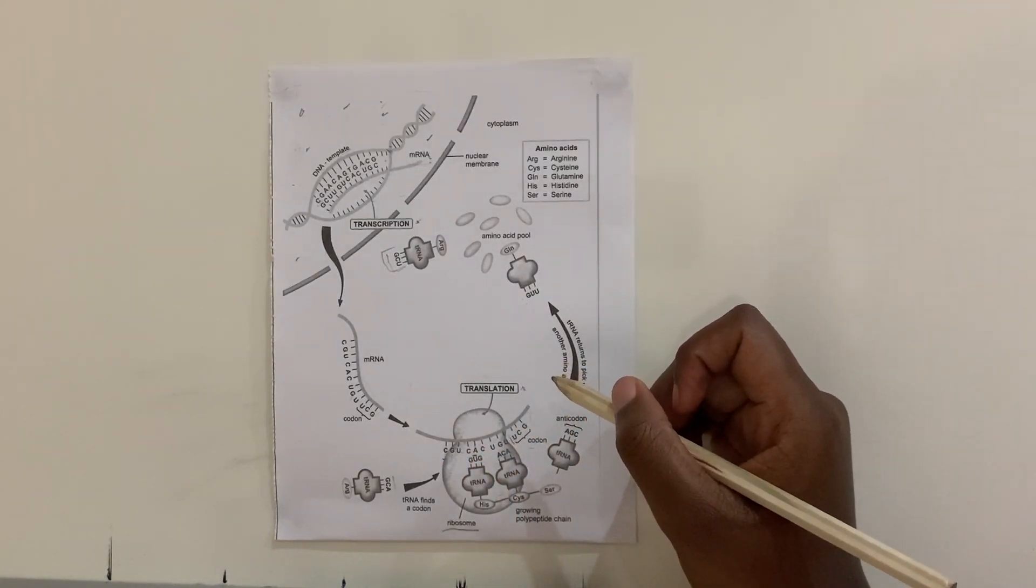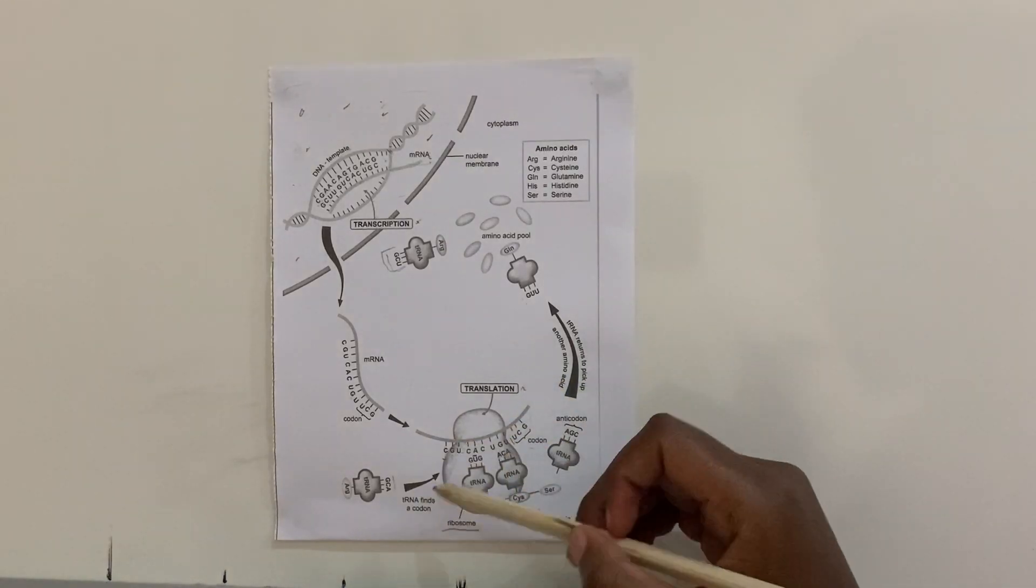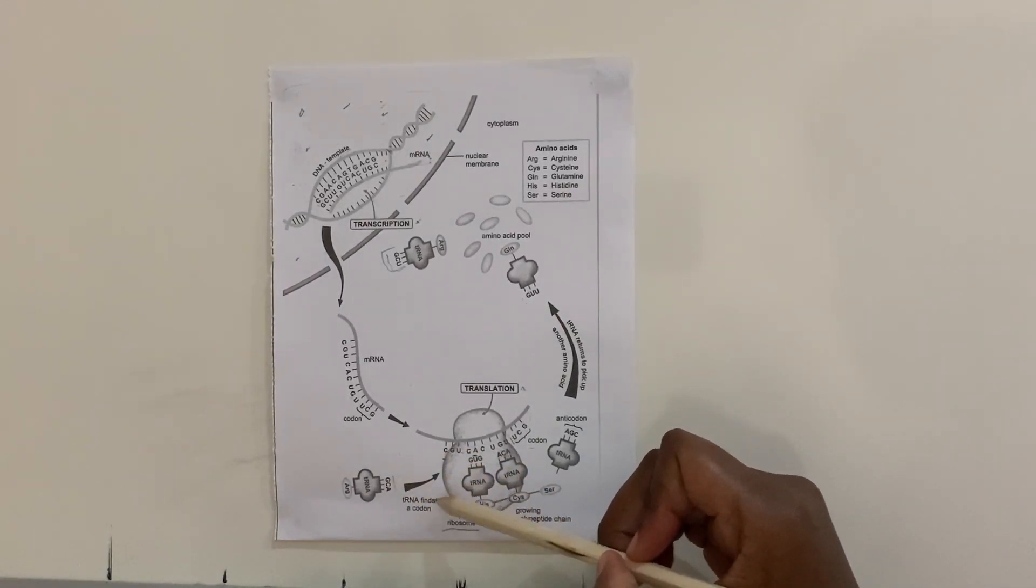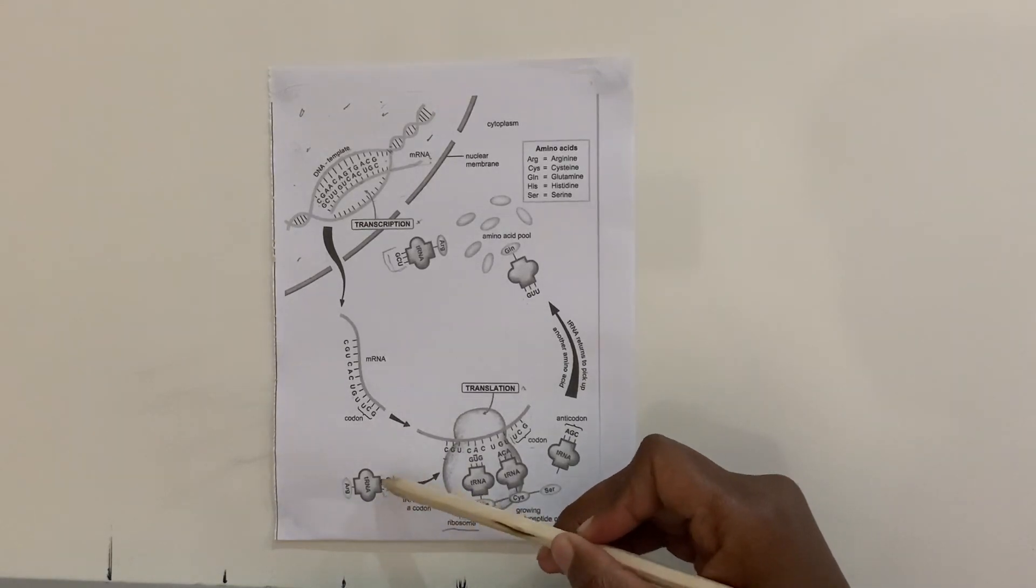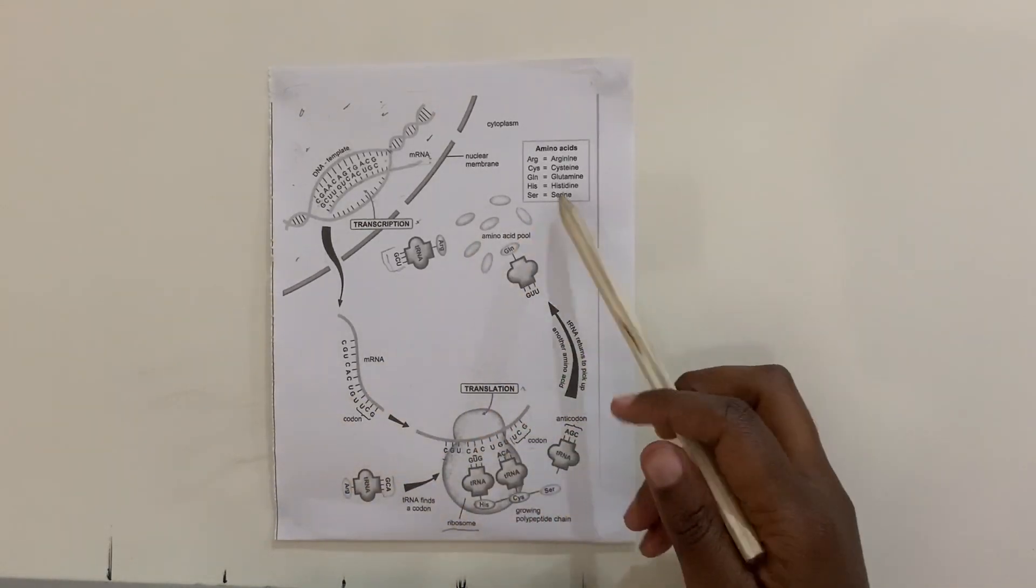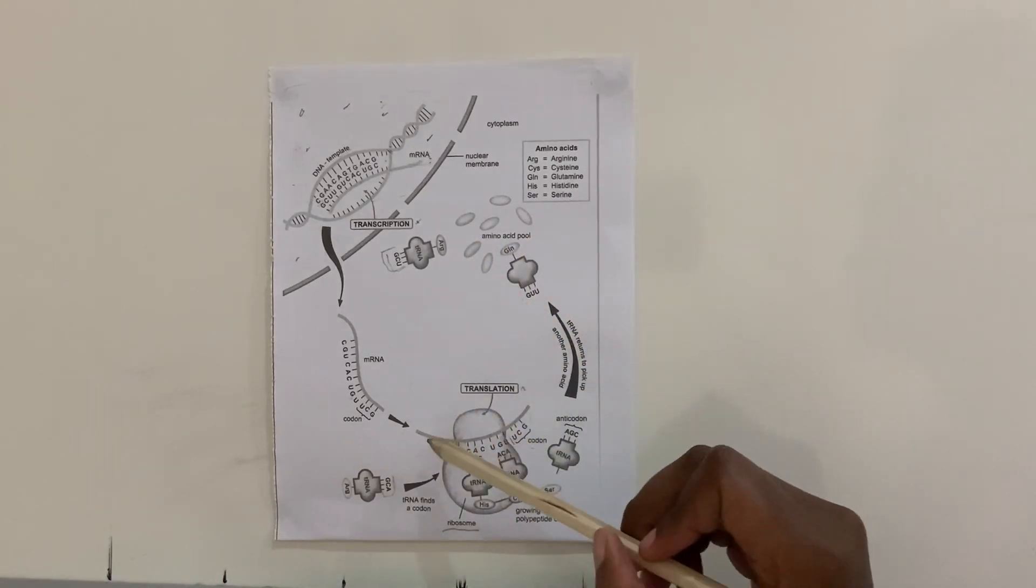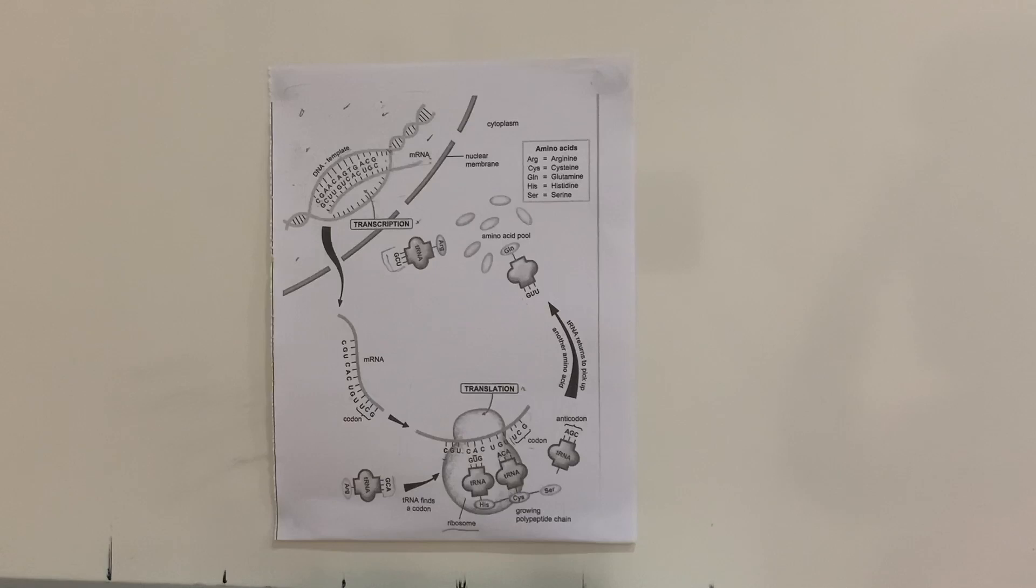So once the peptide bond has been established between the amino acids, the tRNA detaches itself from the anticodon and it goes back and fetches another amino acid. So that process continues until it gets to amino acid 50 or more, because a protein, as you learned in earlier grades, has 50 amino acids. So once it gets to 50, the process stops and the protein is formed and it detaches from the ribosome.